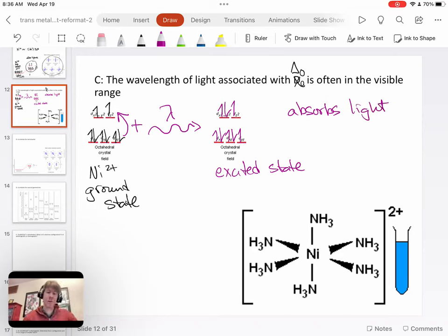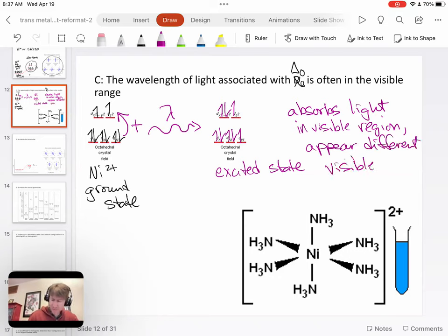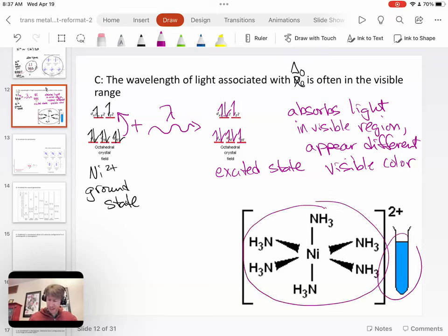And that absorbed light is often in the visible region. And it turns out that when you absorb light in the visible region, you also appear a different color in the visible region. And so here we have nickel with six ammonias in the octahedral geometry, and that will appear a blue color, and that is because it absorbs a different wavelength.